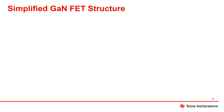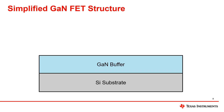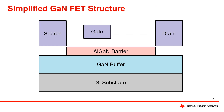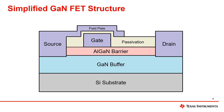We will now go over a basic example of a lateral structure of GaNFETs. In this structure, we have the silicon substrate, gallium nitride buffer, aluminum gallium nitride barrier, our three terminals: source, gate, and drain, a layer of passivation or a protective dielectric, as well as a field plate extending from the source terminal.